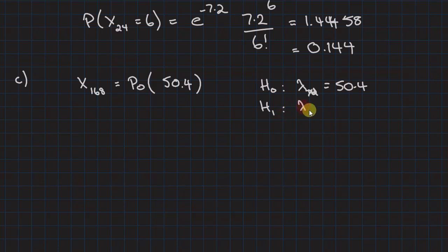The alternate hypothesis is lambda for 7 days. And if we've got better, we expect this to go down. So we're looking for less than 50.4. That's purely what the hypothesis is testing. It's a one-tail test. According to the mark scheme, you can also say that our null hypothesis lambda is 0.3, and the alternative is less than 0.3, or they can do the hypothesis based upon the approximation.